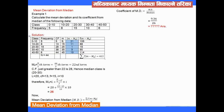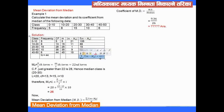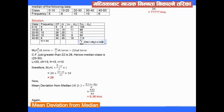Taking each mid value minus 26 (the median), we get the deviation. We then multiply each deviation by its frequency: f × |m - median|. Taking the summation of all these values, the total comes to 400. Dividing 400 by 44 gives the mean deviation.